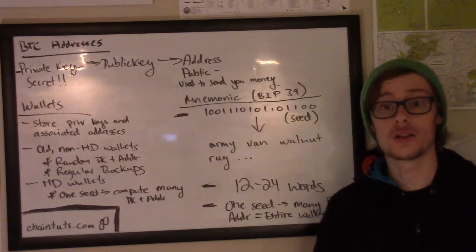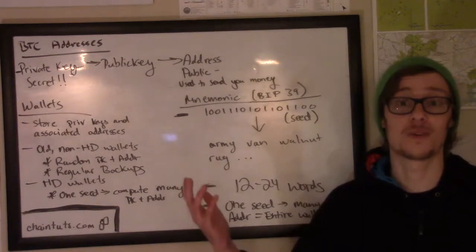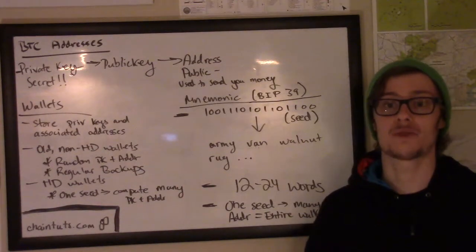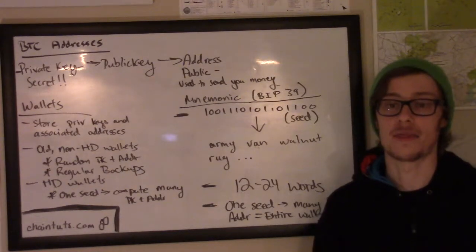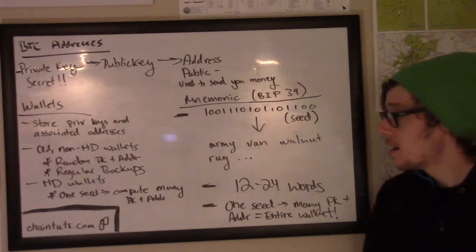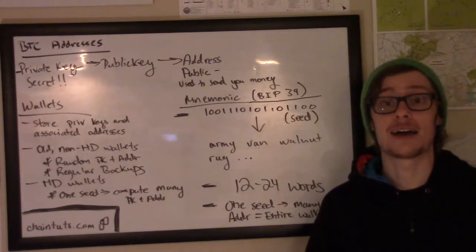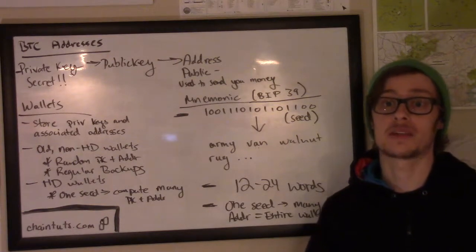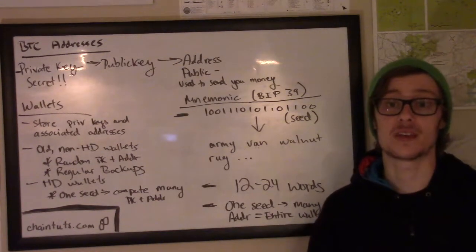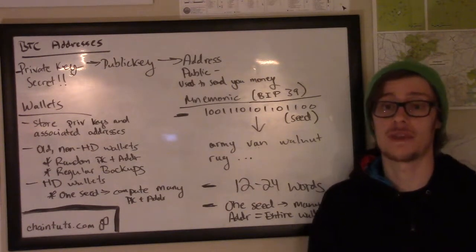The problem with this was that every time a new address and new private key was generated, you would have to back up your wallet again. So in the event that your wallet software was lost, your computer was fried, or you dropped your phone in the toilet with your Bitcoin wallet on it, you would be able to recover the funds stored out on the blockchain — but only if you had regular backups. If you didn't, you might lose a couple private keys and lose access to funds received in recent transactions.